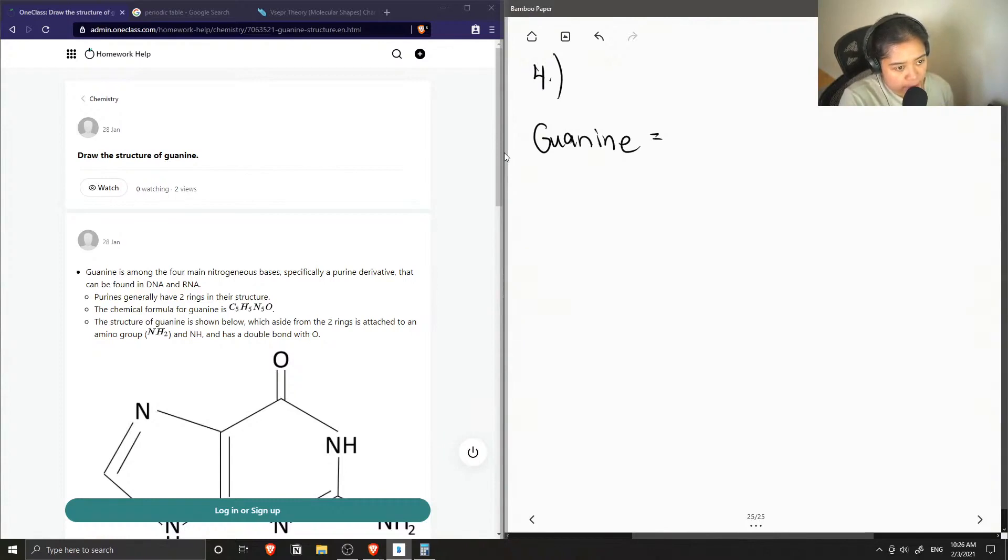So guanine is one of the main nitrogenous bases and it can be found in DNA. It's also a purine ring, meaning it is formed with two rings.